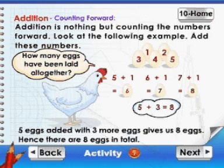How many eggs have been laid altogether? Five eggs added with three more eggs gives us eight eggs. Hence,